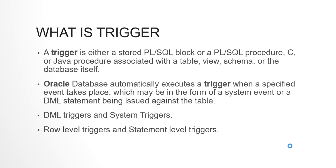We have two types of triggers: DML triggers and system triggers, which can be further broken down into row level triggers or statement level triggers. Row level triggers are executed for each and every row affected by the triggering event, while a statement level trigger is executed only once for each triggering event.